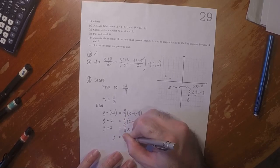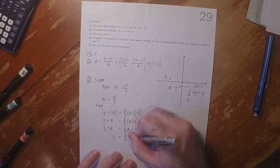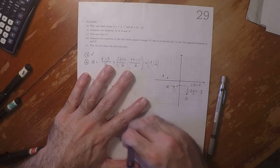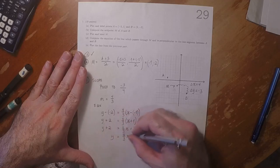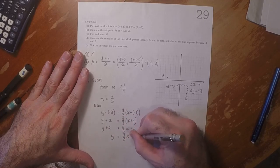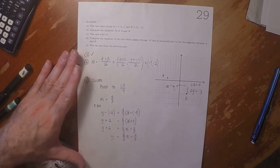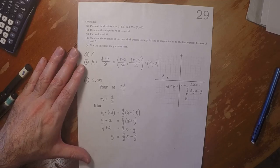So Y is 4 thirds X. And then we're going to subtract 2, which is 6 thirds. So 4 thirds minus 6 thirds is negative 2 thirds. So that's the answer to part D.